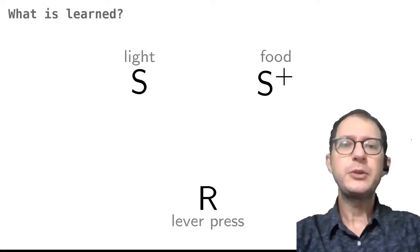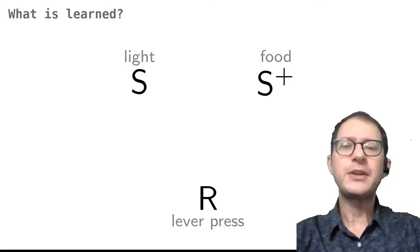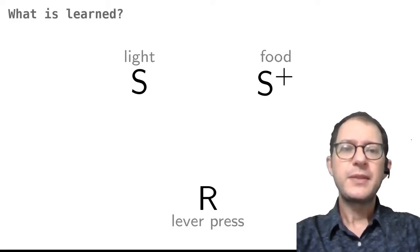Before going into how an instrumental action can be learned, let's recall something from our lesson Do Animals Imagine the Future? In that lesson I discussed how instrumental conditioning involves three elements. There is a response R that we want to reward, like a lever press in this example. Then there is a stimulus S+ that represents the reward, like food.